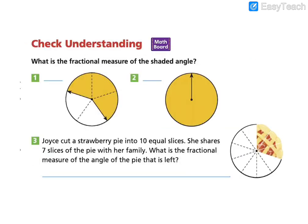Okay, let's go ahead and complete the check understanding. What is the fractional measure of the shaded angle? So we're given a couple of different circles here. This first one is broken apart into how many unit angles? There are five unit angles here, so we know we're working in fifths. Here's one-fifth, two-fifths. And then go ahead and fill in what is the fractional measure of the shaded angle. That fractional measure is three-fifths.